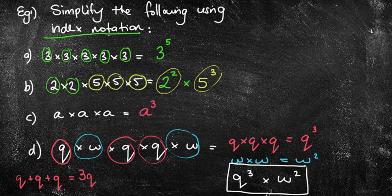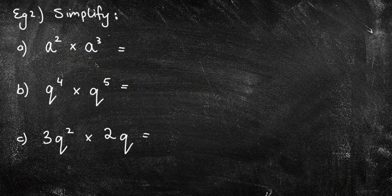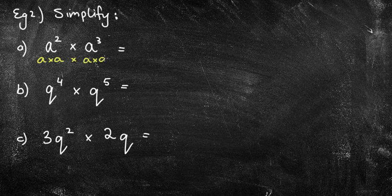You could even write it, if we're going really fancy, as Q to the power of 3 and W to the power of 2, because we know that the times is invisible — we know it's there, we don't have to put it there. But certainly at the moment you can write it in this form. Now these are a bit more challenging — you'll be doing some of these today. We've got A squared, which means A times A, and then we've got A cubed, which is A times A times A. How many of those A's do I have times together all together? I've got 1, 2, 3, 4, and 5, which means I've got A to the power of 5.